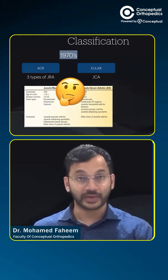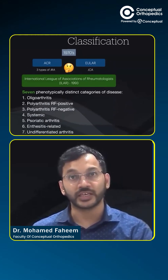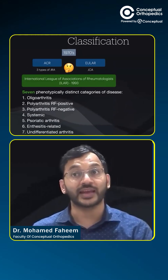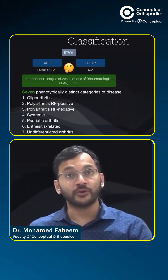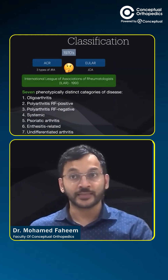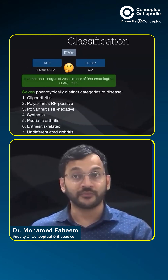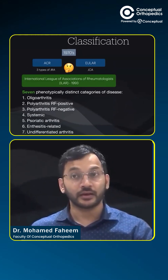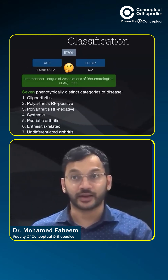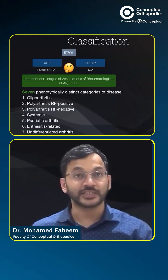In 1993, all the confusion was streamlined by a newer classification given by the International League of Associations for Rheumatology (ILAR). They divided patients into seven phenotypically distinct categories: oligoarthritis, polyarthritis (rheumatoid factor positive or negative), systemic JIA, psoriatic arthritis, enthesitis-related arthritis, and undifferentiated arthritis. We'll discuss all of these categories, including how to classify patients and their clinical features.